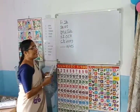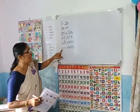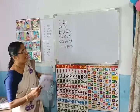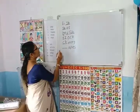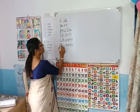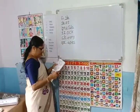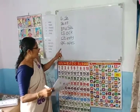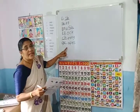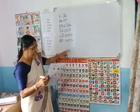Which letter comes here? Look. A, P, E, S — which letter? G, R. Gr — G, R — grapes. G, R, A, P, E, S — grapes.